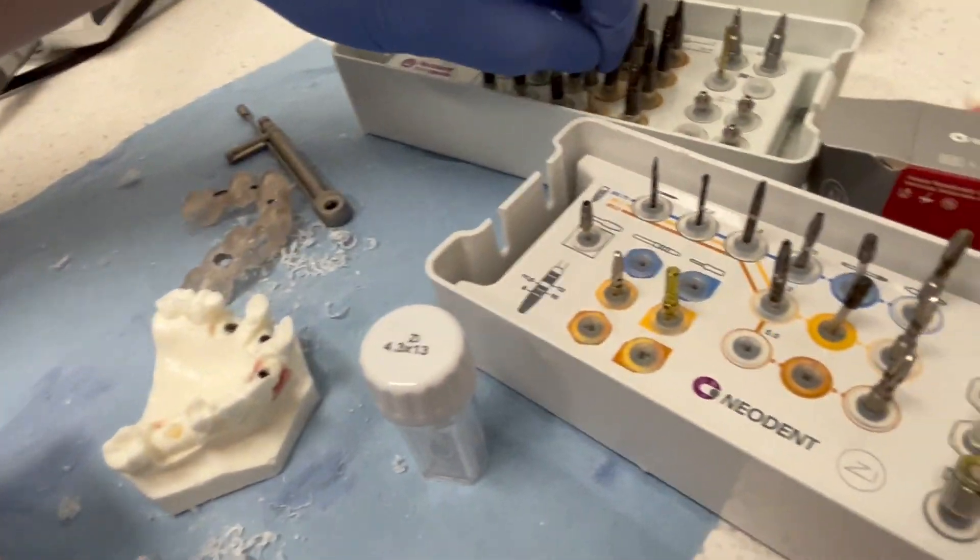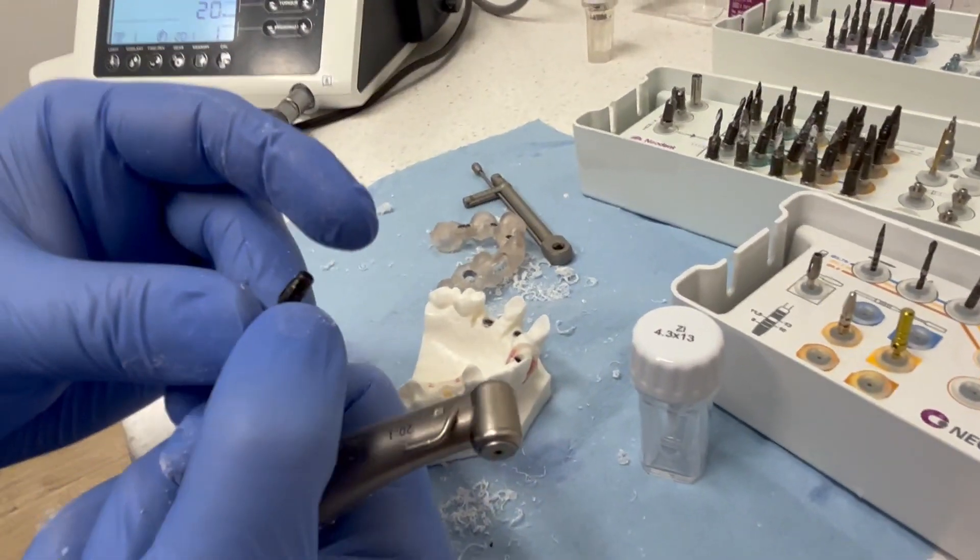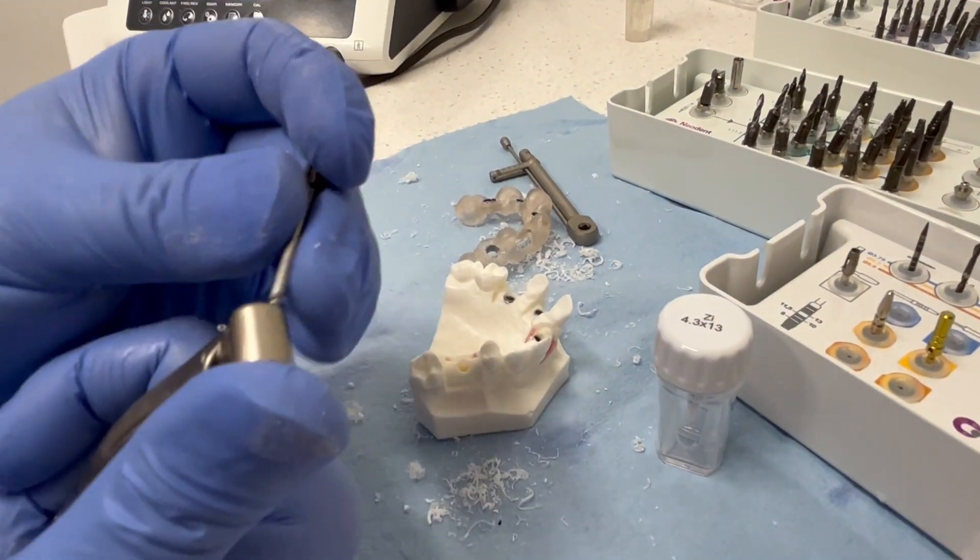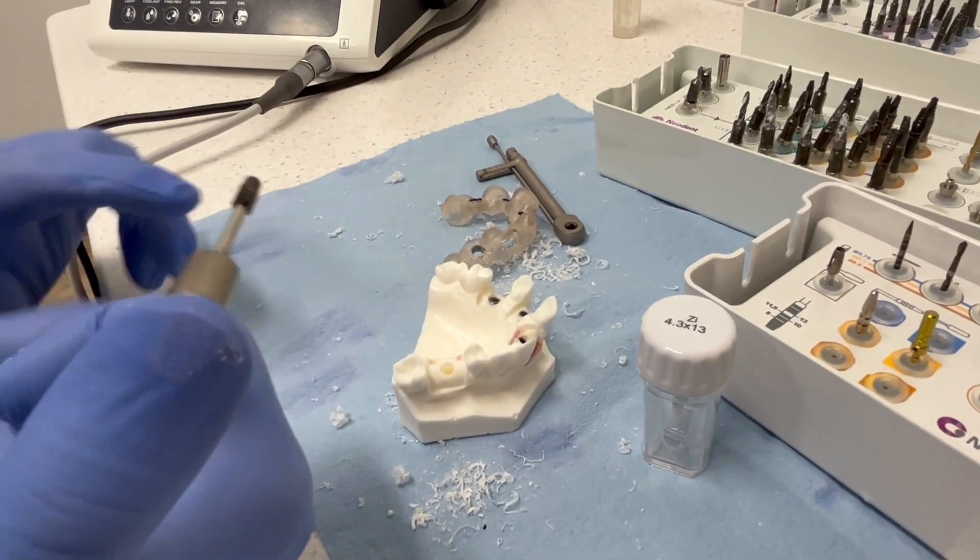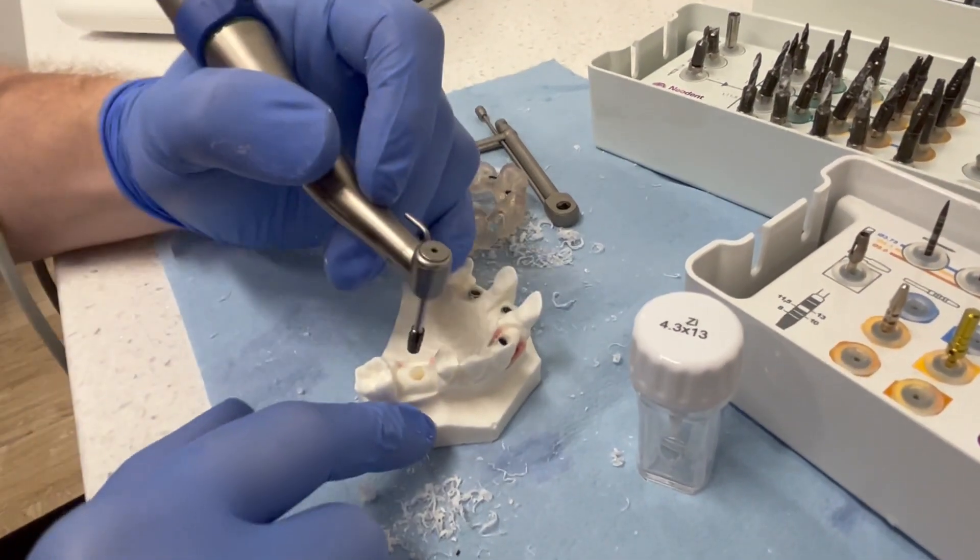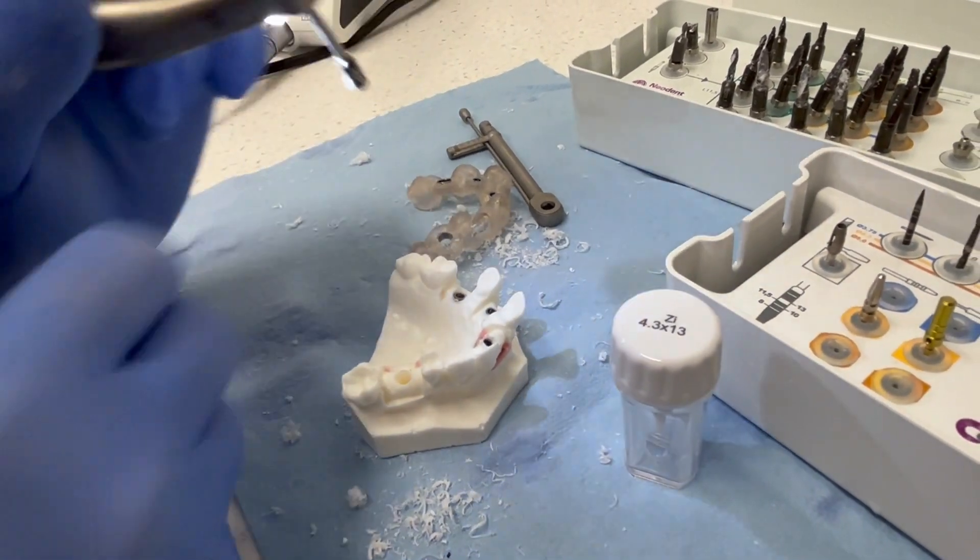And we're going to grab this bone profiling tool for the 4-3-ZI. And we're just going to take it down a little bit past that line. And all we're doing is flaring that cortical plate so we don't get hung up during our implant placement. So you'll see this fits in nicely. We'll take this down. And we flared our top.